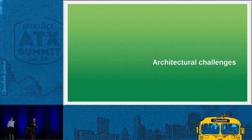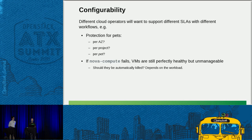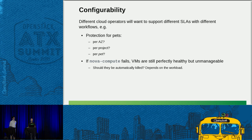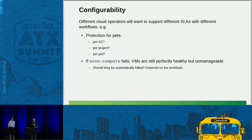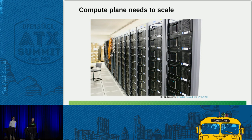So if this is really needed functionality, why hasn't it been done already? The answer is that it's surprisingly tricky to do reliably. The first challenge is configurability — every cloud is different, every cloud operator has different SLA requirements. You might want HA per availability zone, per project, or even per instance. There are also unusual failure cases, like if nova-compute fails but the VMs could still be running perfectly happily and providing your service, yet they're not manageable anymore. So do you kill that compute node? Then you're damaging your service unnecessarily, but on the other hand you've lost manageability.